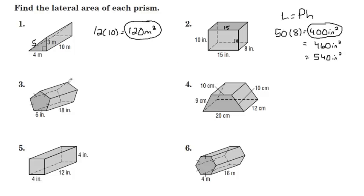Number three, we got a pentagonal prism. Regular pentagon for the bases, 6 times 5 gives us 30. 30 times the height of 18 gives us 540 square inches.